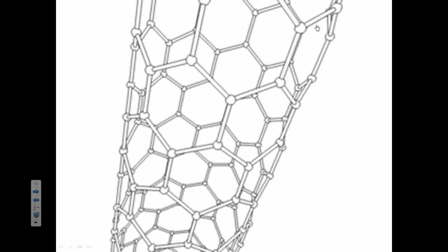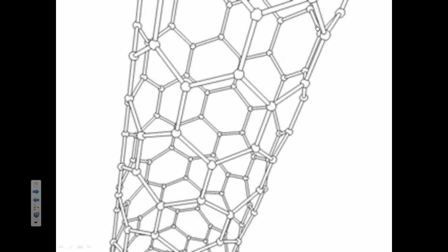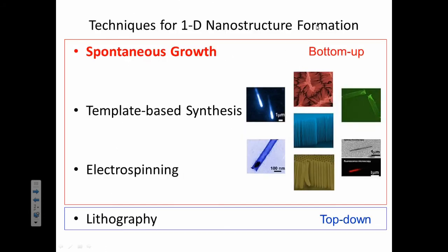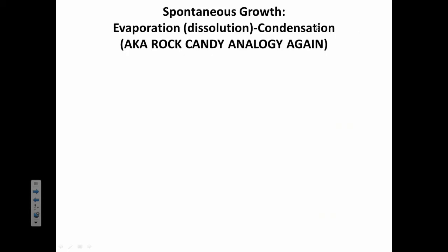Here's just a little animation of a carbon nanotube. So how do we make these things? First, it's very similar to the method that we talked about with 0D nanostructure formation. That's spontaneous growth.